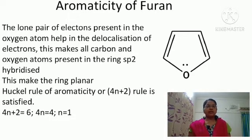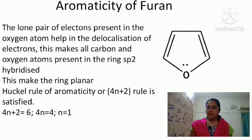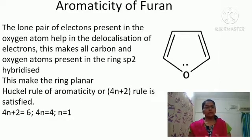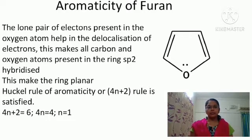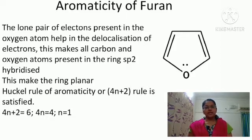So all the carbon atoms as well as the oxygen atom present in the ring become sp2 hybridized, making the furan ring cyclic and planar in nature. Moreover, Hückel's rule of aromaticity — the 4n+2 rule — is satisfied in the case of furan. The number of π electrons is six: four electrons from the two double bonds and two electrons from the oxygen lone pair. So 4n+2 equals 6, and n becomes 1, a perfect whole number.